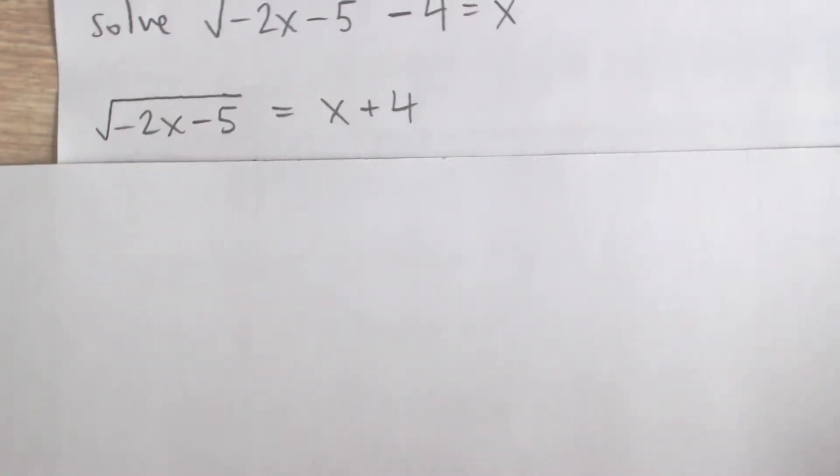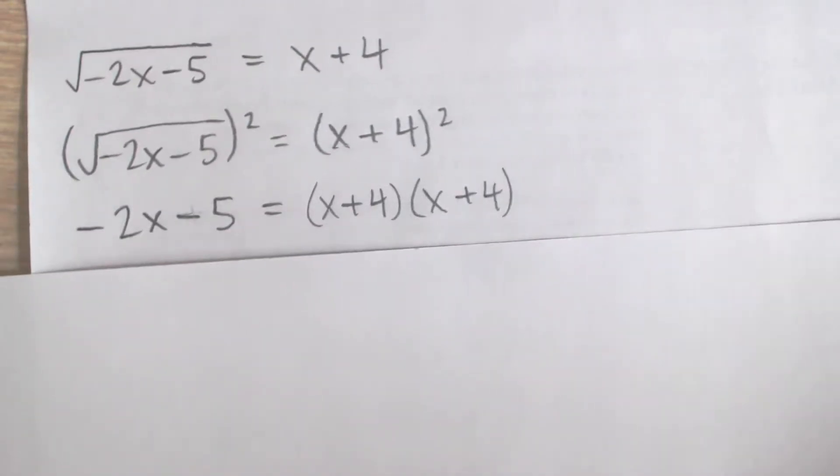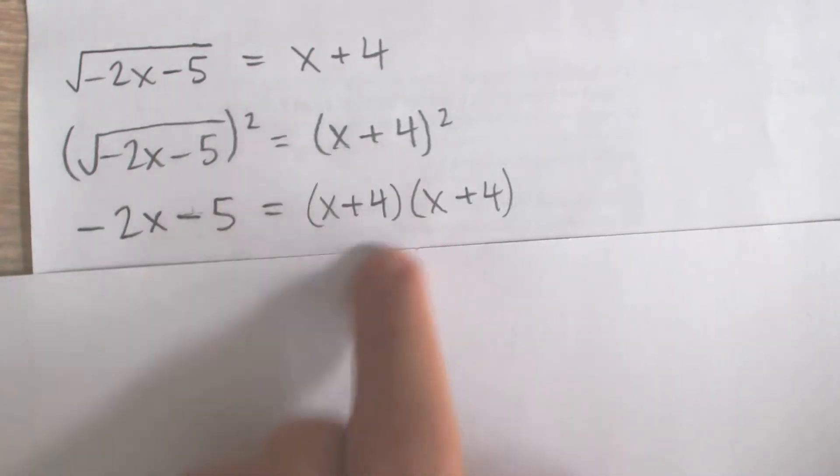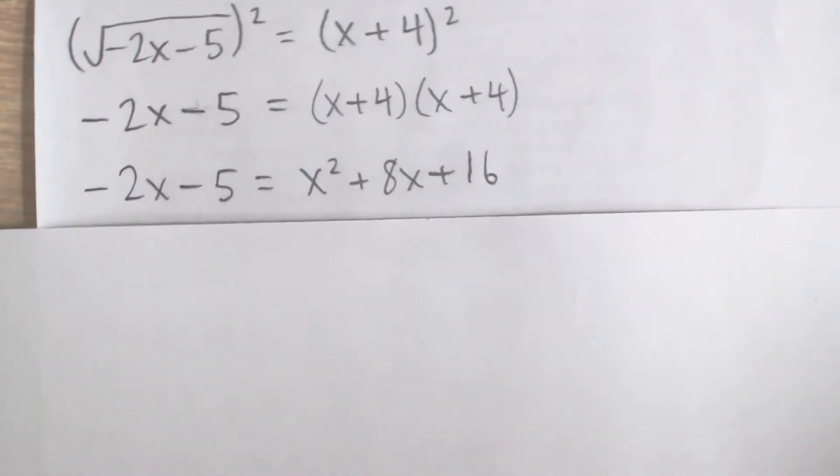Now we can square both sides of the equation. On the left, the square root is just going to cancel out because square and square root are opposites. On the right, we have x plus 4 times x plus 4. If you foil that out, you're going to get x squared plus 8x plus 16.